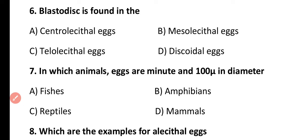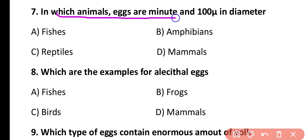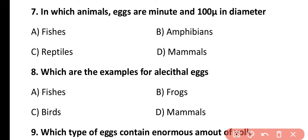Question 7. In which animals are eggs minute and 100 micrometers in diameter? Fishes, amphibians, reptiles, or mammals? The correct answer is option D. In the case of mammals, eggs are minute and 100 micrometers in diameter.